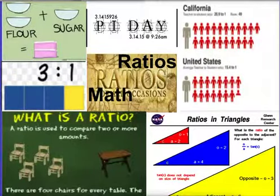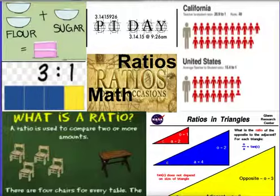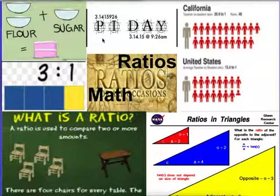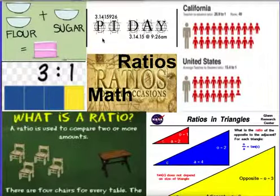Good morning. This is Wednesday and I am going to begin covering ratios with you. Let's take a look at this first slide. You have a number of examples of ratios here. This one is what we celebrated on Monday — Pi Day is the relationship or the ratio of circumference to diameter, and the value of Pi is 3.14.